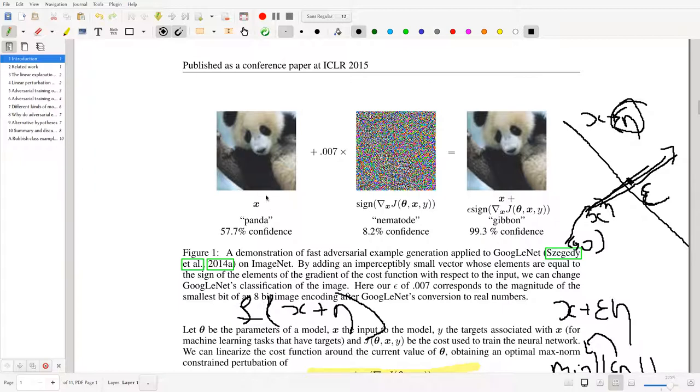Let's go over this diagram. If we have this picture of a panda and it's classified correctly as a panda, then we want to add some kind of vector, some scalar multiple of this vector, such that it's misclassified, in this case to a gibbon.